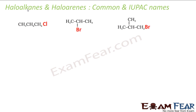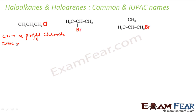So let's take this compound. We have to write the common name and IUPAC name. The common name: we have 1, 2, 3 — propyl and this is chloride. So the common name will be N-propyl chloride. For the IUPAC name, we will number it 1, 2, 3 — all single bond — so it will be 1-chloropropane.